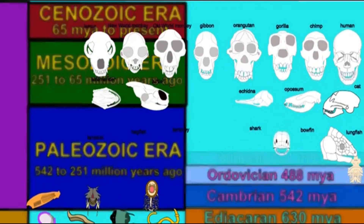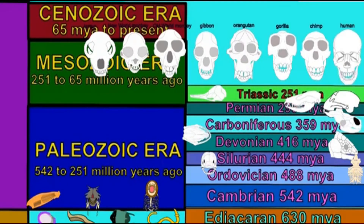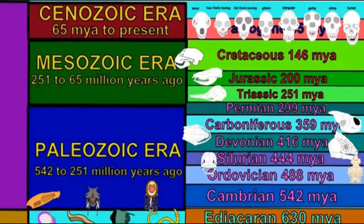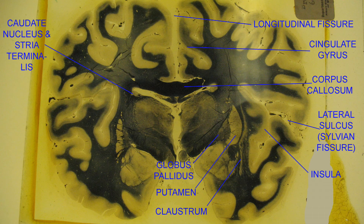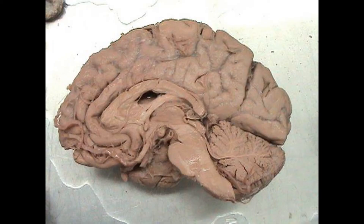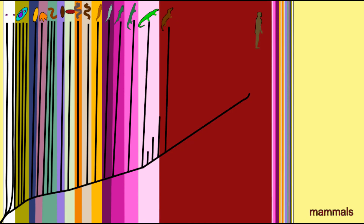It was the early vertebrates which first developed a cerebrum, and in the more than 500 million years of vertebrate history, the cerebrum has undergone many changes in diverse lineages. And while the human cerebrum is, to a large degree, what makes us unique — gives us our consciousness, gives us our capabilities as a species — it is a modification of the cerebral structure and organization which we have inherited over a very long evolutionary history.